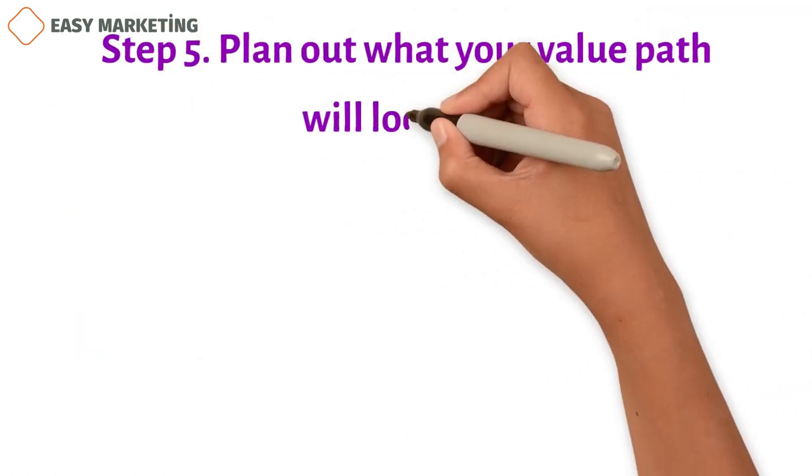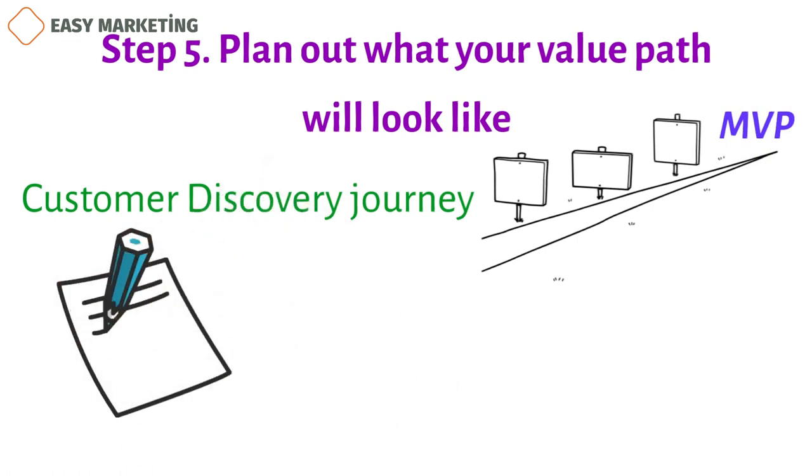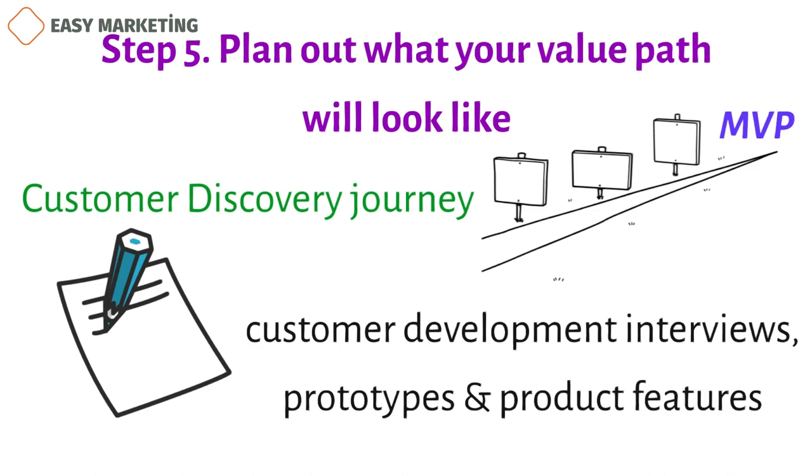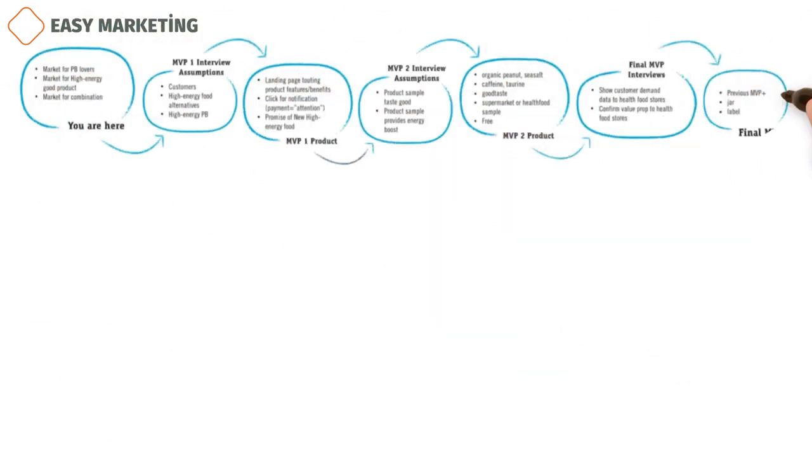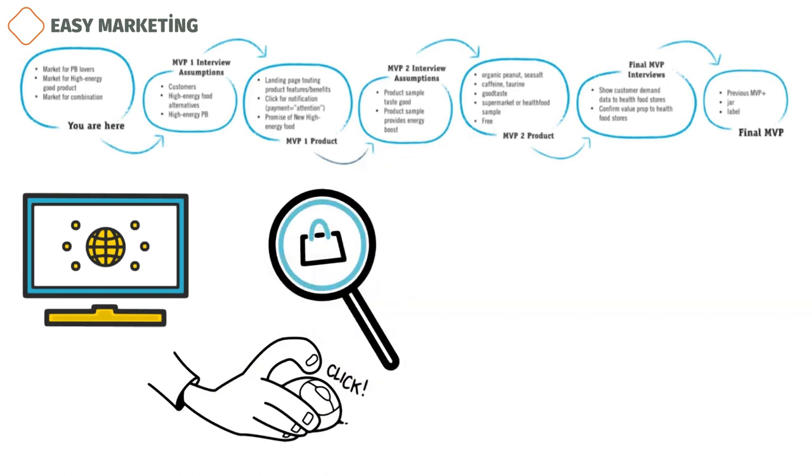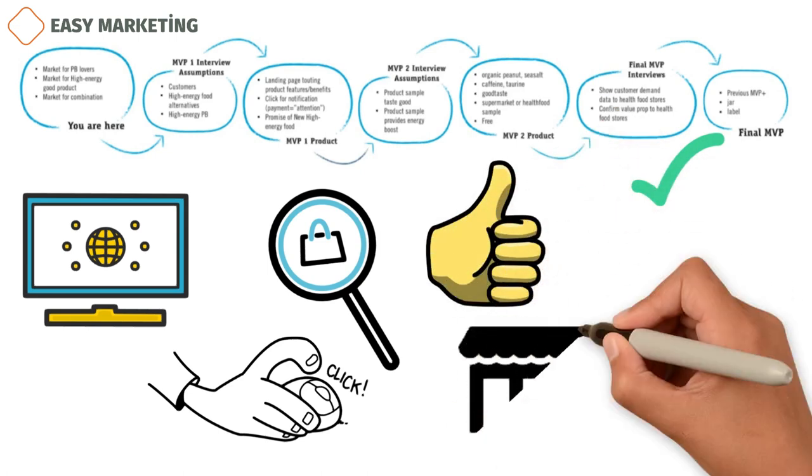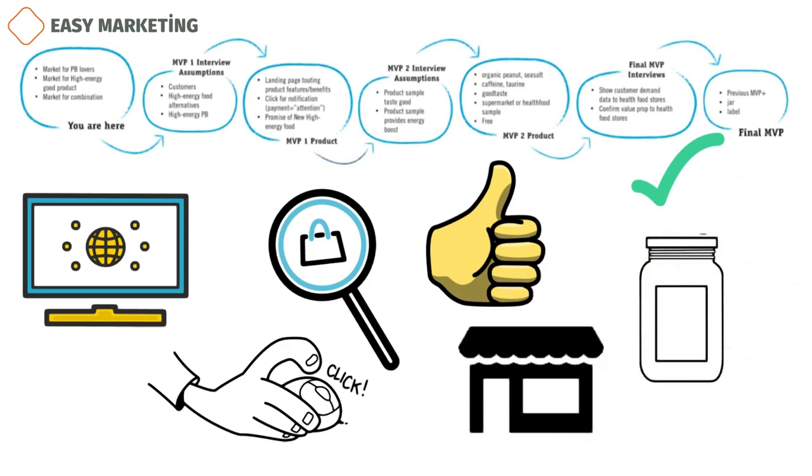Step 5. Plan out what your value path will look like. In the last stage of the process, you will map out the value path or customer discovery journey that leads from where you are now to your final MVP. From the table you made in the first step, make a list of the basic assumptions you need to test for each risk. Most likely, you'll need to test your assumptions using a combination of customer development interviews, prototypes, and product features. The value chain for our made-up peanut butter product might look something like this: the value path is made up of different MVPs that test important premises. The first assumption to be shown wrong is that there is a market for high-energy peanut butter. This can be done by making a simple landing page and keeping track of how many times the buy button is clicked. If the assumption is true, the next goal is to show that the peanut butter tastes great. To test this theory, one could give away free samples at grocery stores. If everything goes as planned, you can start thinking about the jar and the brand label for the finished product.